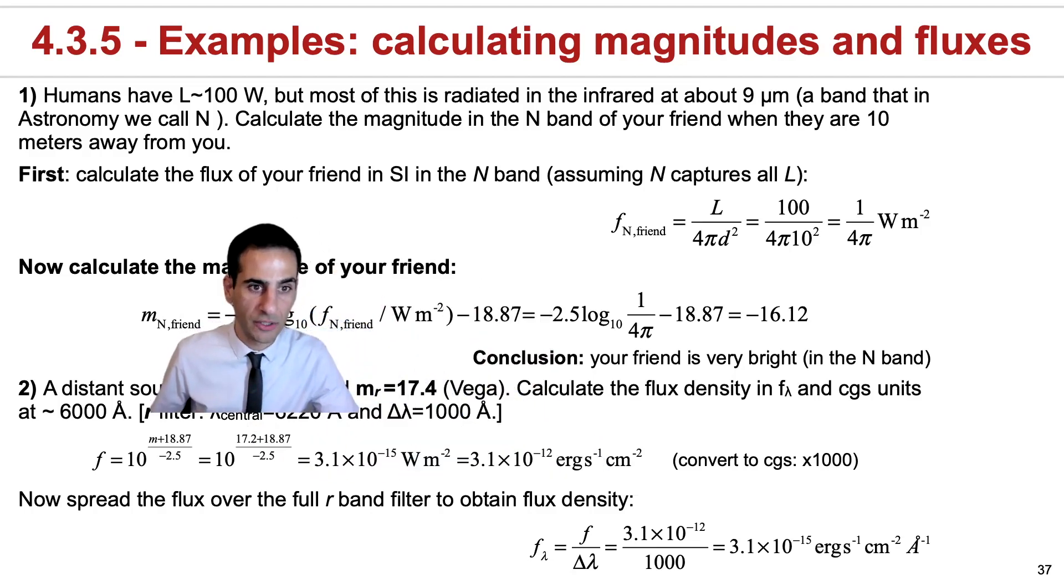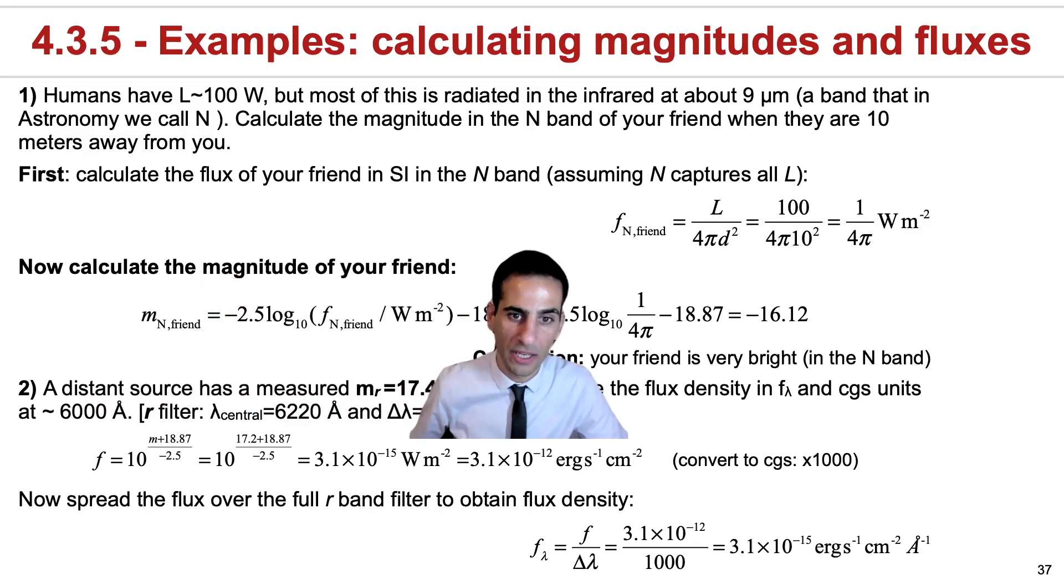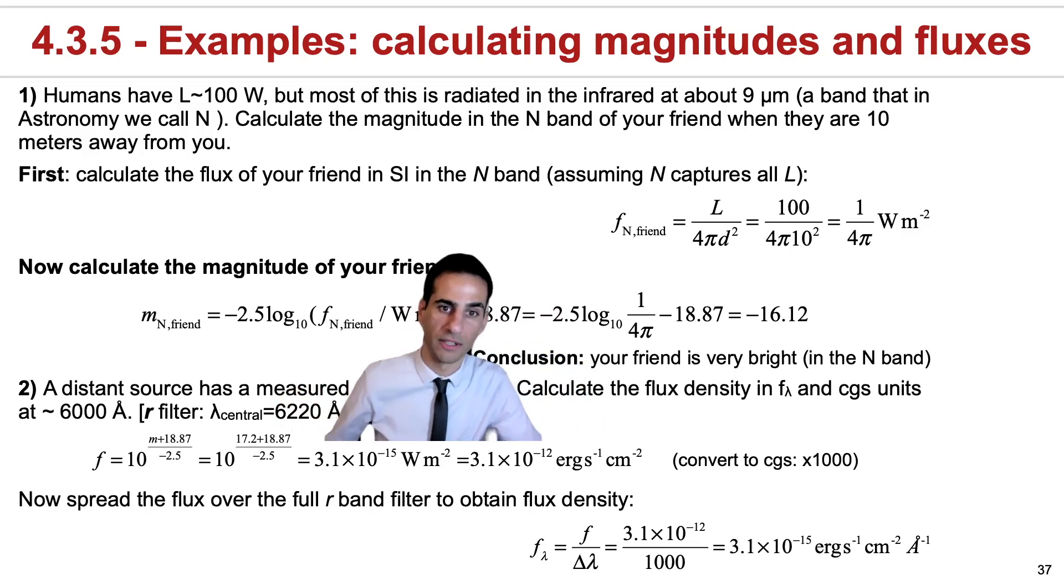So the first thing you can do is to transform a magnitude into flux. So you can use our understanding of the Vega system to rearrange the equation. This would give you a flux that's 3.1 times 10 to the minus 12 erg per second per centimeter squared after converting it from international system.